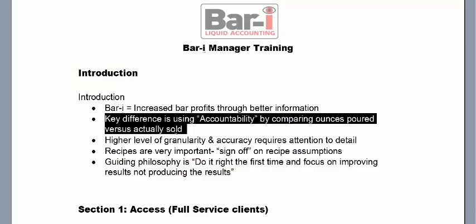What we mean by accountability is to take the numbers a step further — to look deeper. We precisely compare, for every single product, how many measures were rung into the point of sale system versus how many were actually poured. By comparing the two, we get an accountability score — a percentage score — and we aggregate that up for every product in the bar, giving you an overall accountability score.